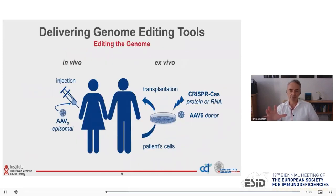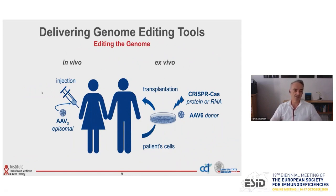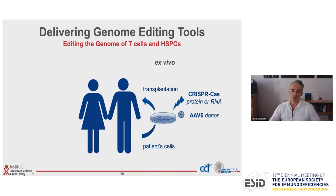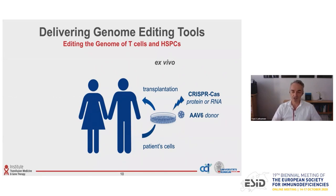The next question is how do you deliver this tool to your cells of interest? If you want to target T cells or hematopoietic stem cells, we isolate them from leukophoresis products. You take them into culture, then electroporate the cells to transfer mRNA encoding the designer nuclease or the protein itself. After a short while, you transduce them with an AAV vector to provide a donor for homologous recombination, and after two to three days, you can transplant them back to the patient.